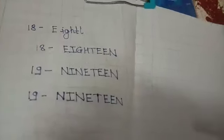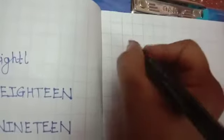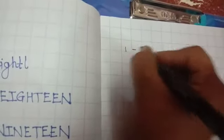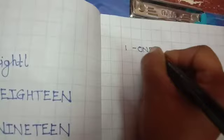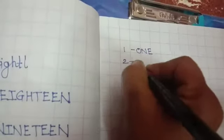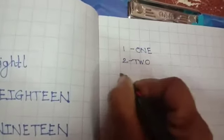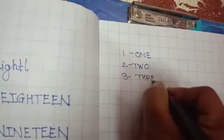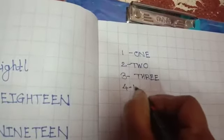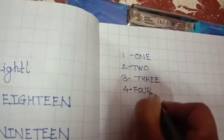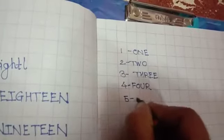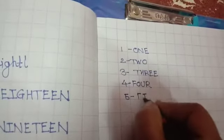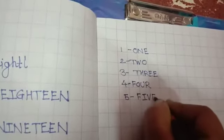Say with me loudly: O-N-E, one. Then T-W-O, two. T-H-R-double E, three. F-O-U-R, four. F-I-V-E, five.